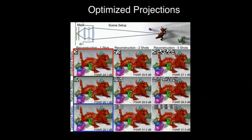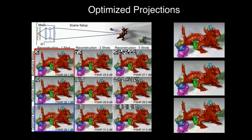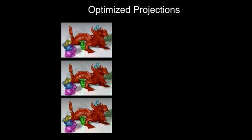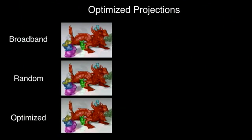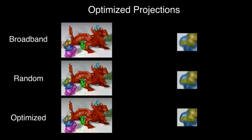We evaluate the proposed techniques for synthetic scenes and compare previously used broadband codes, random mask patterns, and optimized patterns. Optimized optical codes, as derived in our paper, allow sharp features and great parallax to be recovered even from a single shot.